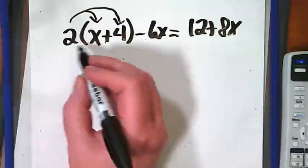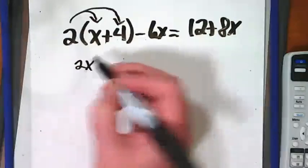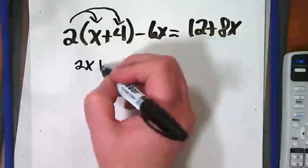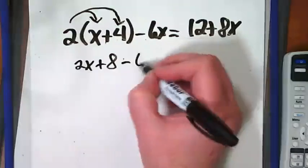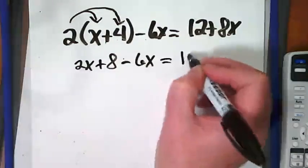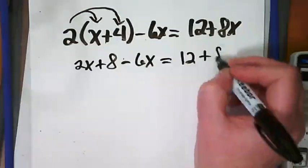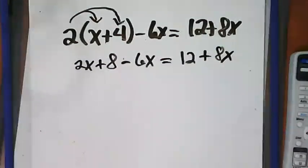So I'm going to rewrite this as 2 times x is 2x, 2 times 4 is 8, and then I bring down everything else in the equation because we haven't done anything with it yet. So the first thing we did is distribute.